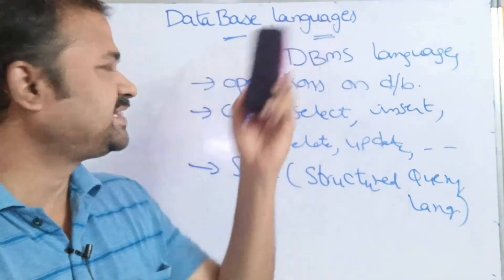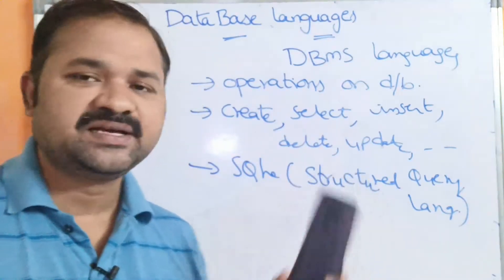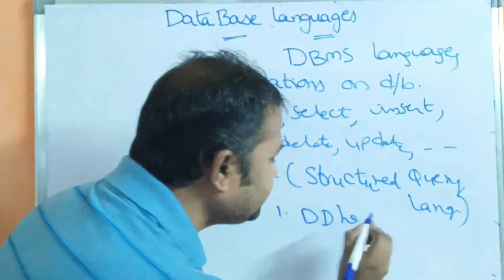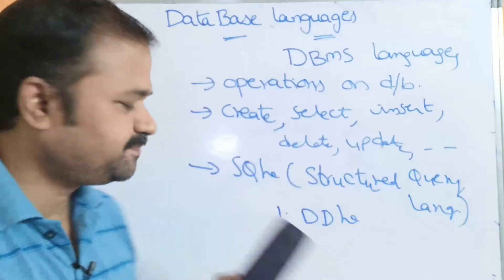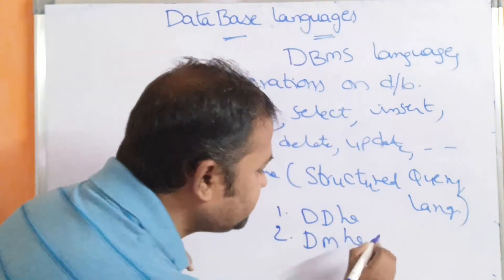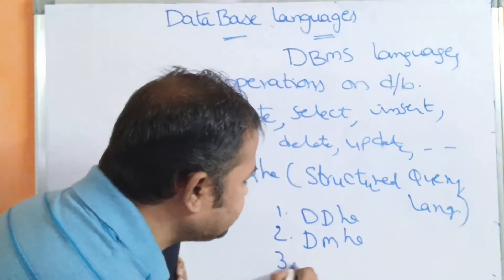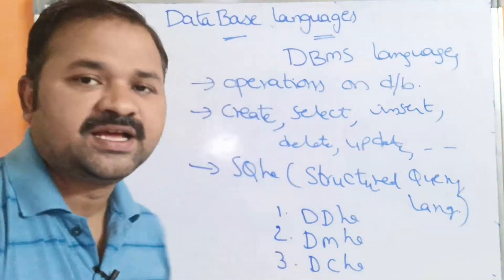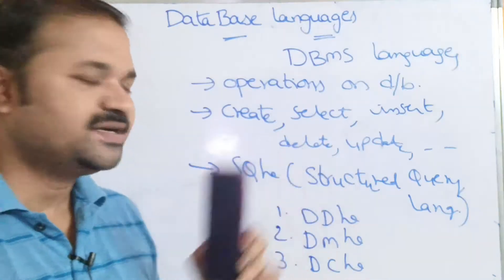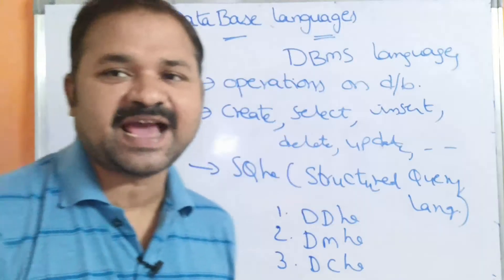Mainly we have three types of database languages. All three languages come under SQL. The first one is DDL, which stands for Data Definition Language. The second one is DML, which stands for Data Manipulation Language. The third one is DCL, which stands for Data Control Language.